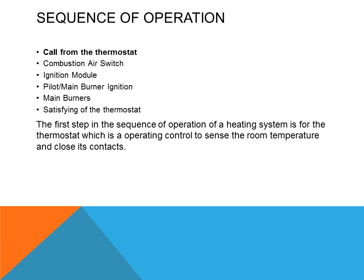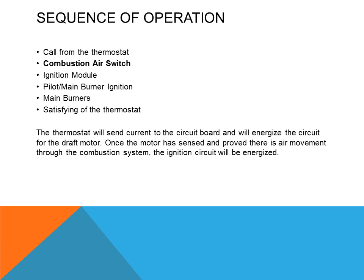The thermostat will sense the temperature in a room and will close its contacts inside the thermostat. The contacts will close on a decrease of room temperature. The thermostat will send current to the circuit board and will energize the circuit for the draft motor. Once the motor has sensed and proved there is air movement through the combustion system, the ignition control will be energized.